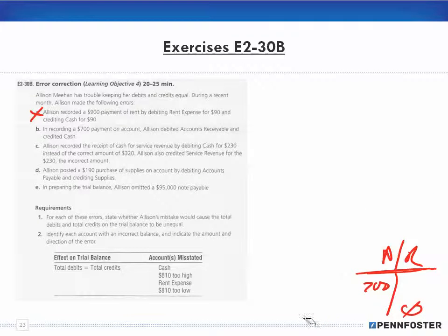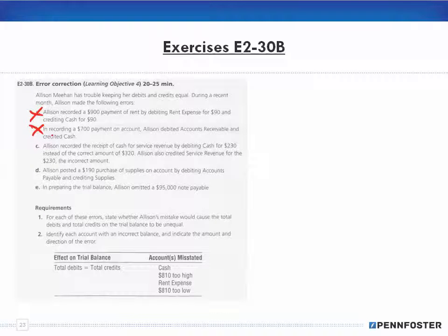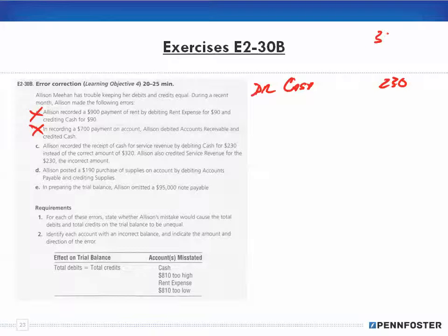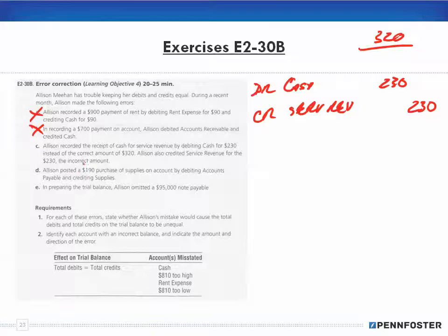T-accounts and picking a reference number are useful tools to analyze these situations. For error C, Allison recorded the receipt of cash for service revenue by debiting cash for $230 instead of the correct amount of $320, and also credited service revenue for $230. Debits equal credits — even at the wrong amount.